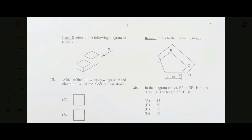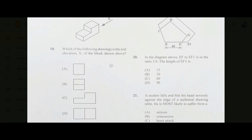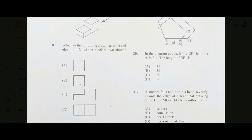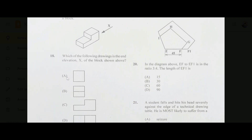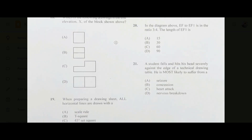Number eighteen: which drawing is the end elevation X of the block shown? The arrow points to one end labeled X. The answer should be a rectangle with a hidden line across the center. None of the options perfectly match — option B has a solid line where it should be hidden. The answer is most likely B, but note there appears to be an error in the question.